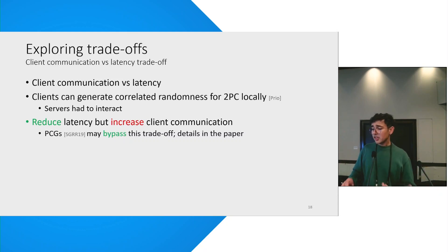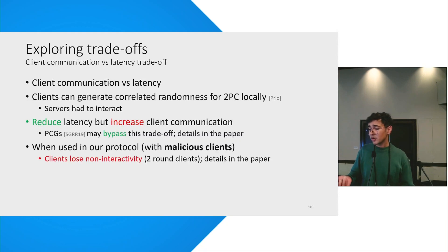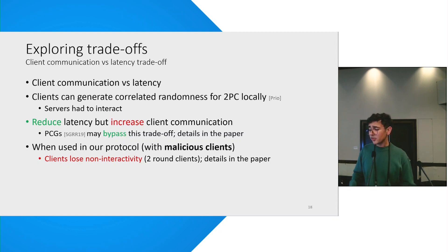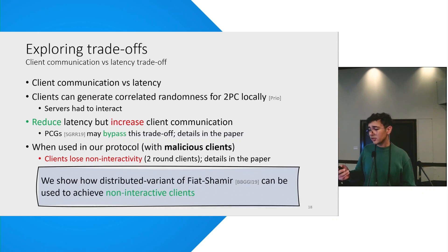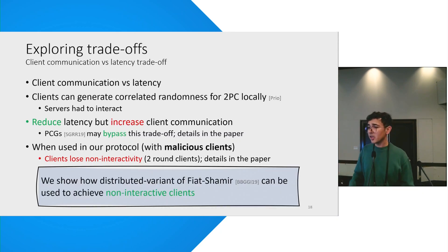One problem that shows up if we actually use clients for correlated randomness is that clients in our protocol can be malicious, which means whatever they're sending cannot be trusted. And in our protocol, if we try to fix that, unfortunately we lose non-interactivity at the clients — which is not ideal. But the good news is that we show how you can use a distributed variant of Yurchimi to actually solve that problem as well.